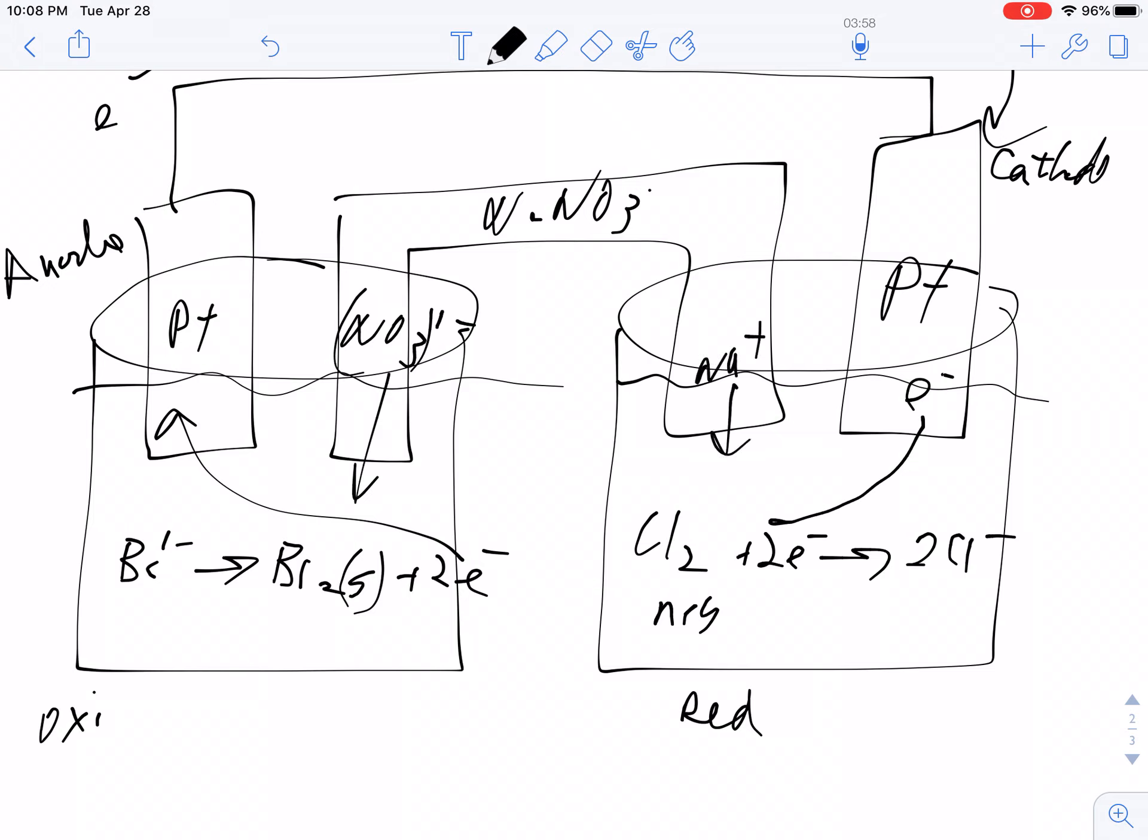And then all we have to do is write the shorthand notation. So you've got your electrode, the anode, and then you've got bromide, and then you've got bromine gas. Your salt bridge. On this side you've got chloride, chlorine gas.